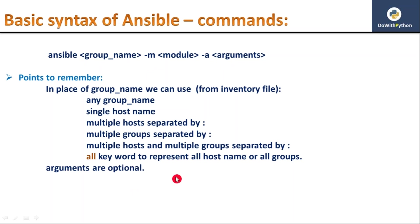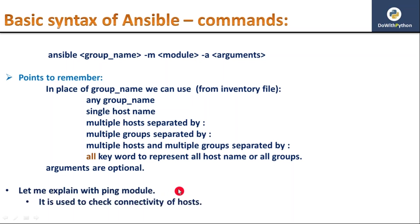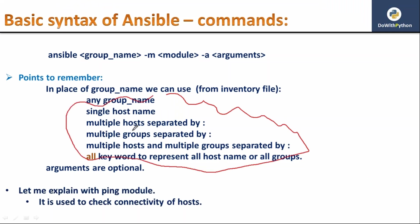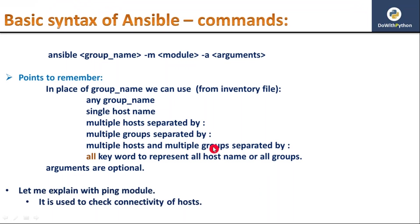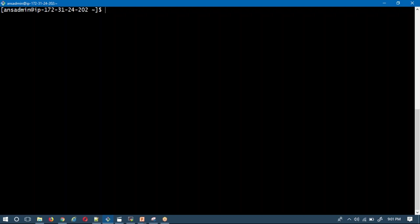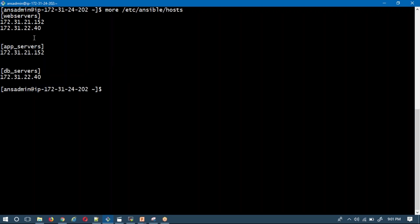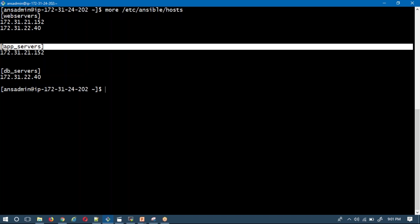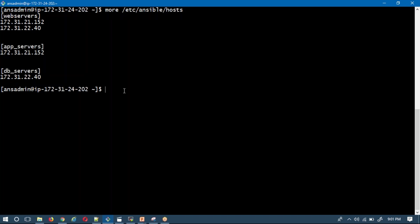To understand this syntax, let's use a simple example with the ping module. The ping module is used to check the connectivity of a host. Let me run the ping module on different targets. I'll open my Ansible admin client server — here it is — and I have my Ansible inventory file with web server, app server, and database server groups.